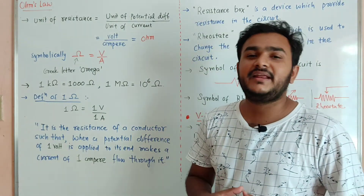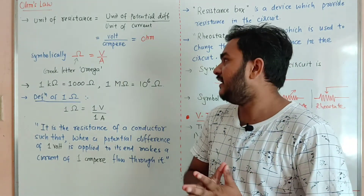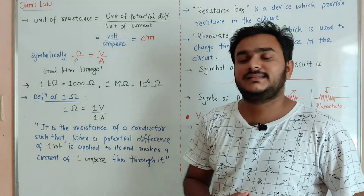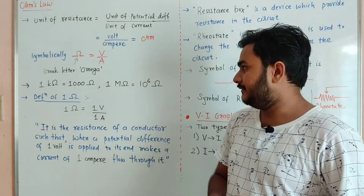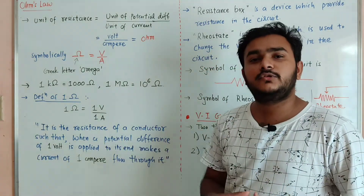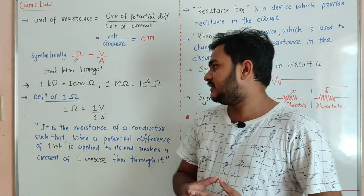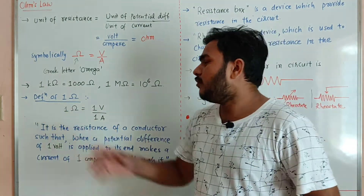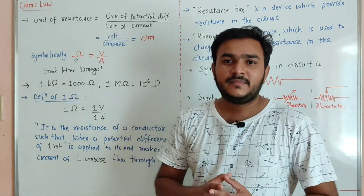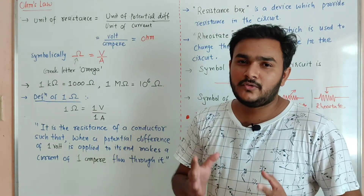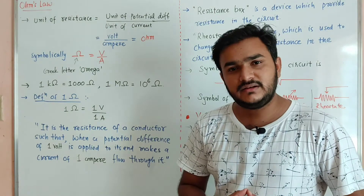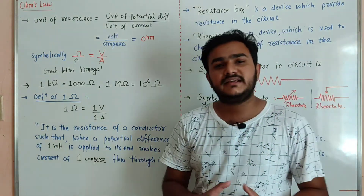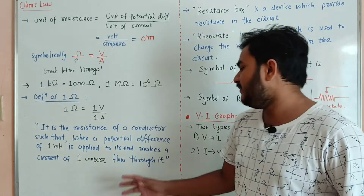The resistance unit is the potential unit divided by the current unit — volt divided by ampere. One ohm is equal to one volt by one ampere. How to define one ohm of resistance: one ohm is defined as the resistance of a conductor such that when a potential difference of one volt is applied across its ends, it makes a current of one ampere flow through it.